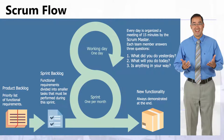Here's the Scrum flow specifically. Coming from the product backlog — which holds the prioritized list of all requirements — items are added to the functional requirements and divided into smaller tasks that must be performed during a sprint. A sprint can be one to four weeks or once per month, depending on the type of project you're working on.